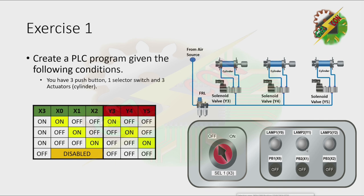Exercise 1. Create a PLC program given the following conditions. You have three push buttons, one selector switch, and three actuators. As you can see on this table, if the selector switch is off, all of your switches are disabled. If the selector switch is on, energizing X0 will cause Y3 to turn on, energizing X1 will cause Y4 to turn on, and energizing X2 will cause Y5 to turn on.